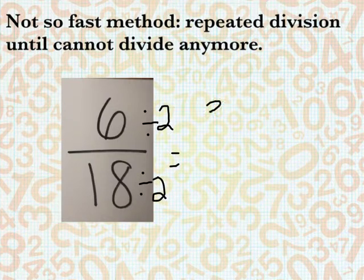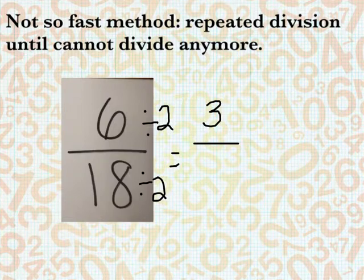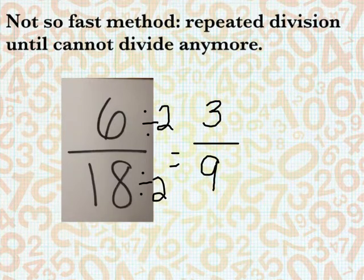So then 6 divided by 2 is 3, and 18 divided by 2 is 9. Well, then again I have to reason because I look at it and say you can divide 3 by 3 and 9 by 3.